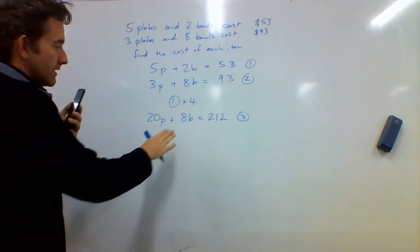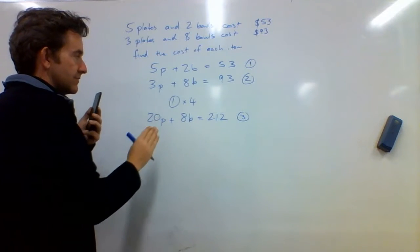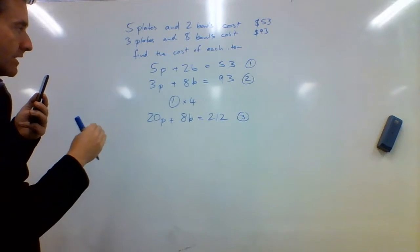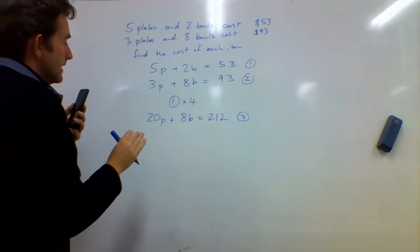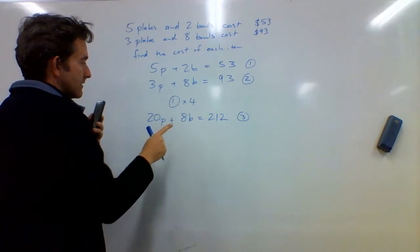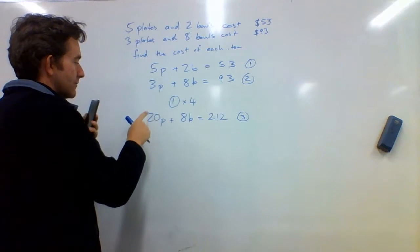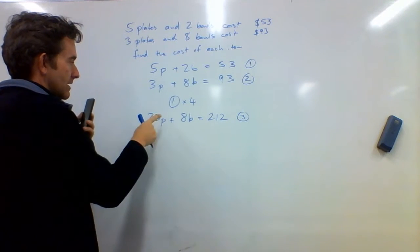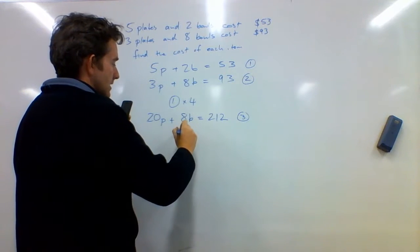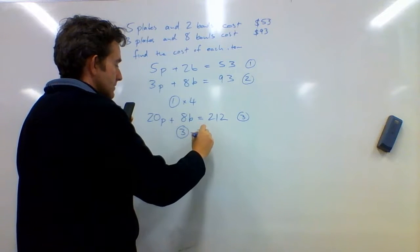So I can see that I've got an 8b here and an 8b there. If I subtract one of my equations from the other, I will get no b's left over. The easier way to go here is I'm going to subtract 2 away from 3. If I do it the other way around, I'll get negative numbers.